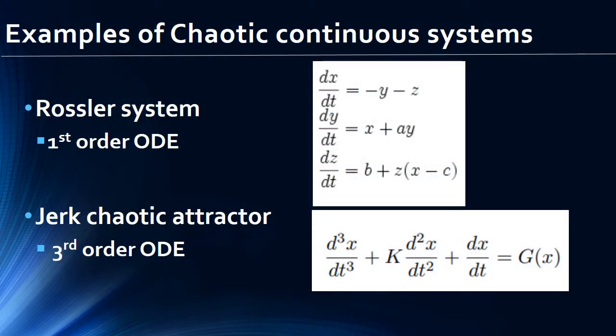Some of the common examples of chaotic systems are the Rössler system, Chen system and Lorenz system. Here I have listed two such systems. The Rössler system is a first-order ODE and the jerk chaotic attractor is a third-order ODE.